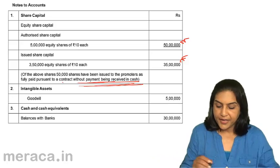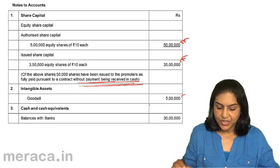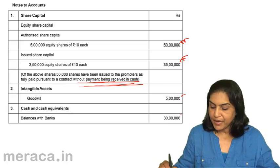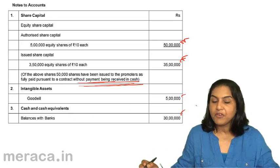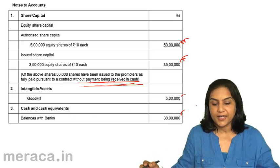Under intangible assets: goodwill of 5 lakhs. Under cash and cash equivalents: balance with bank of 30 lakhs.